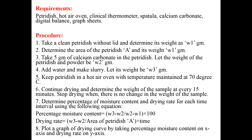Next, determine the percentage moisture content and drying rate for each time interval using the following equations: percentage moisture content equals (W3 minus W2) divided by (W2 minus W1), multiplied by 100; and drying rate equals (W3 minus W2) divided by area of petri dish (A) into time. Then plot the drying curve graph with percentage moisture content on the x-axis and drying rate on the y-axis.